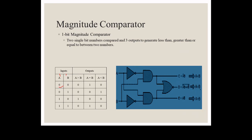For one bit, this bit is compared with that bit. Four comparisons are possible. When zero is compared with zero, both are equal, so the A equal to B output gives a high signal and the other two outputs are zero. When A is zero and B is one, B is greater, so the B greater output gives a high signal. Similarly, when A is one and B is zero, the A greater than B output gives high. When both A and B are one, the A equal to B output will be high.